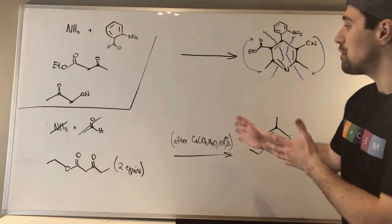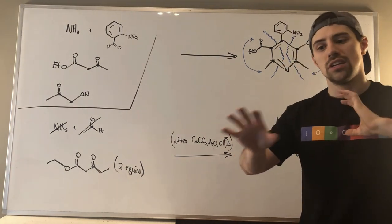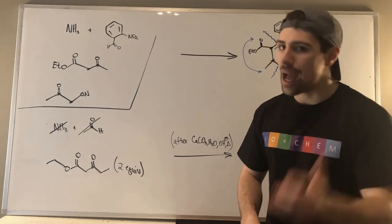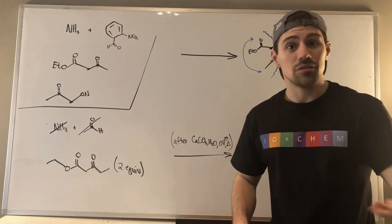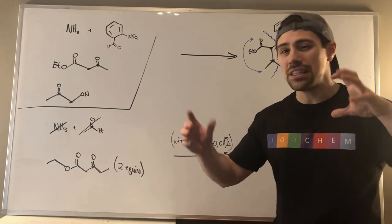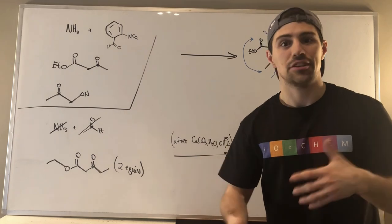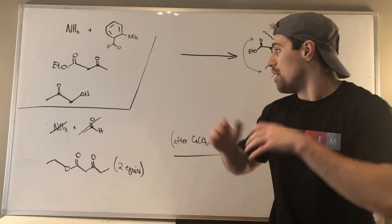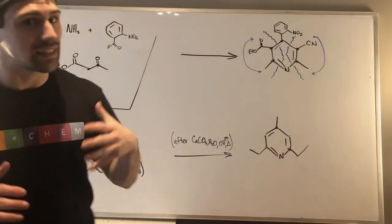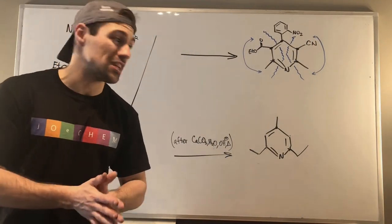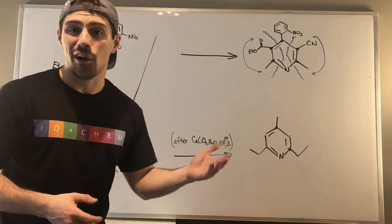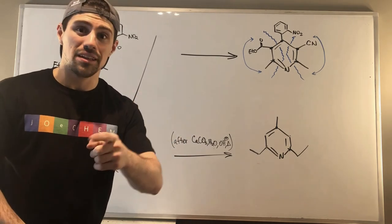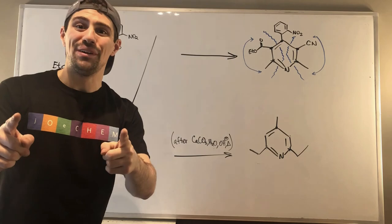I like these problems because once you understand the mechanism under the hood, there's a procedure for predicting the product. It's a difficult concept initially, but really easy on a test — there's a reliable shortcut. This reaction is really cool because it involves so much different chemistry: acid-base, tautomerization, imine formation, aromaticity — the whole kitchen sink in one reaction. And it happens in nature, which is rad. Thank you for tuning in. Make sure to like and subscribe and I'll see you in the next video.